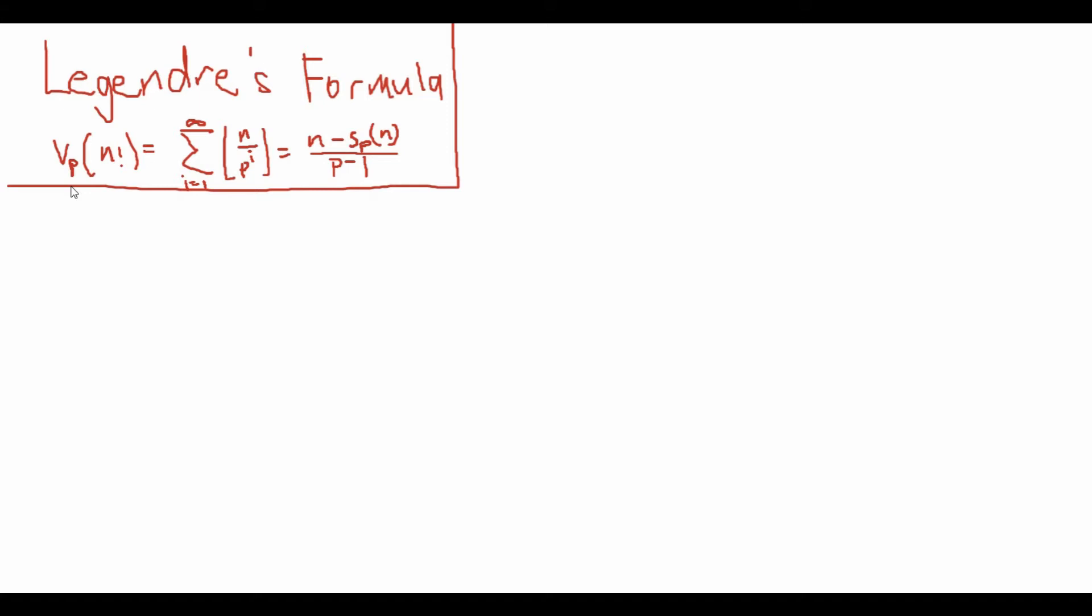This is also equivalent to n minus sp of n over p minus 1. And for those of you who don't know, vp of a number x is equal to the number of times that a prime, or it doesn't have to be prime, but p divides into x.